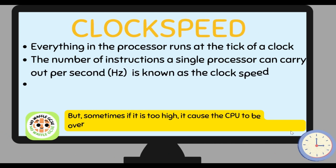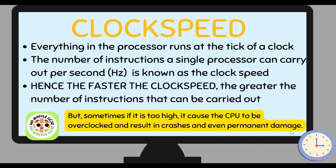Now let's look at clock speed. Everything in the processor runs at the tick of a clock. The number of instructions a single processor can carry out per second is known as the clock speed. Hence, the faster the clock speed, the greater the number of instructions that can be carried out. But sometimes, if the clock speed is too high, it could cause the CPU to be overclocked and result in crashes and even permanent damage.